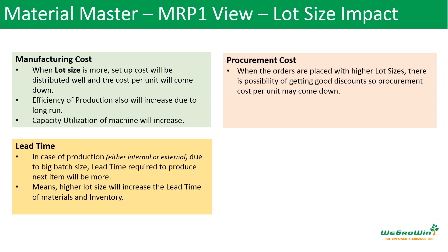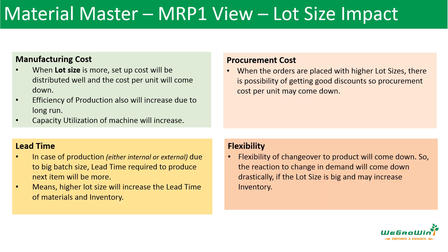However, when you have big lot sizes, if you are producing one item with a big lot size you are not able to change to another product, so your lead time will automatically increase. When the lot size is bigger — for example, instead of producing one product for one hour if you are producing it for ten hours — your lot lead time is ten hours. So the higher lot size increases the lead time of the material.